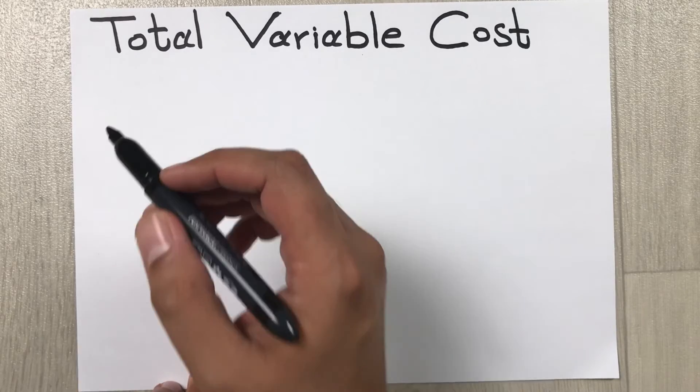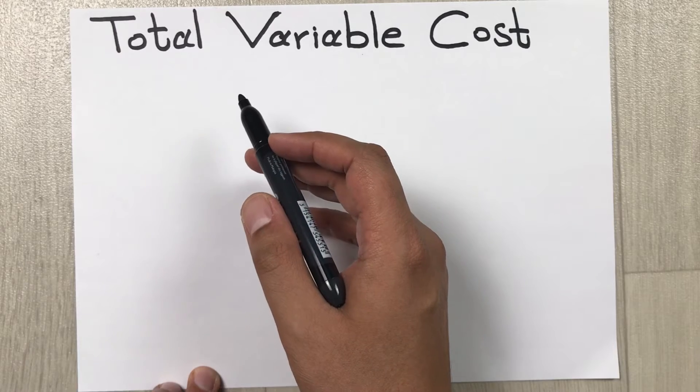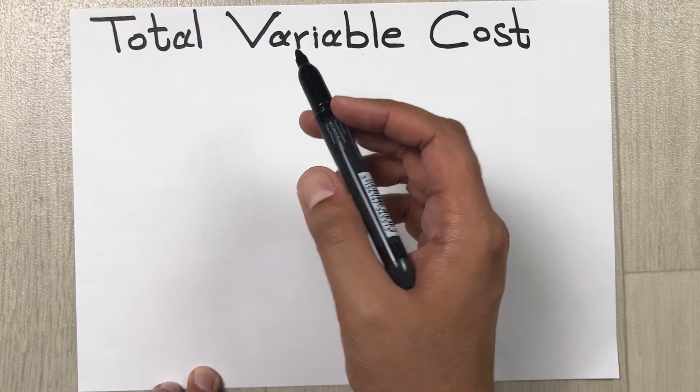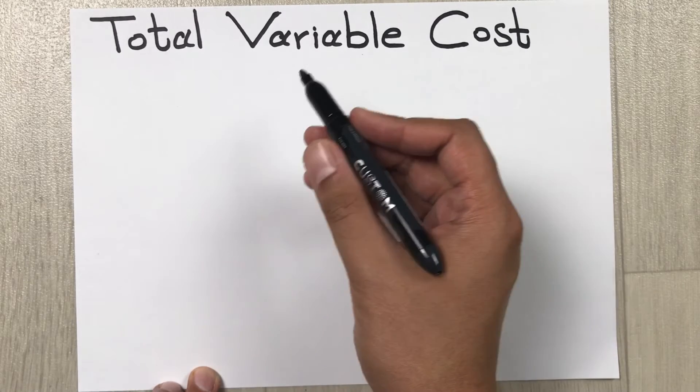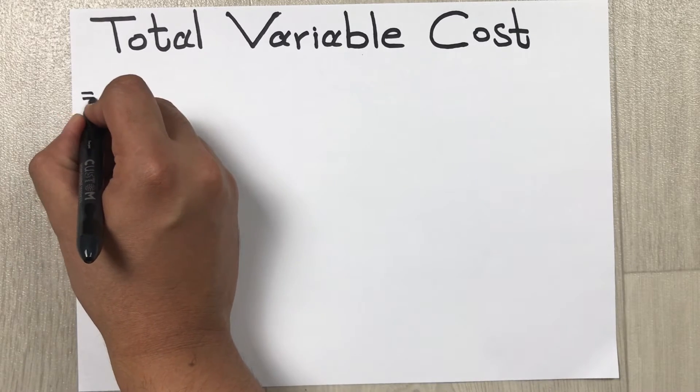Hello guys, I hope you are doing really well. In today's video, I am going to show you how to calculate total variable cost. The formula to find out the total variable cost is equal to total quantity of output